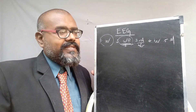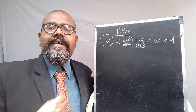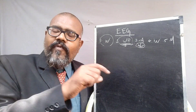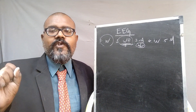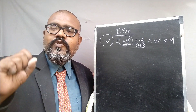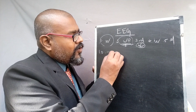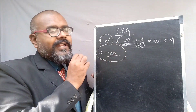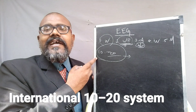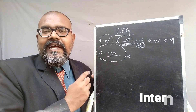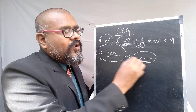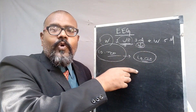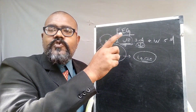The third question is: what is the procedure to acquire the EEG? All signals can be acquired from the human body using transducers like electrodes. Here, 10 to 20 electrodes are used for acquiring the electrical activity of the brain. There is an internationally recognized 10-20 system that defines where these electrodes are placed on the scalp — the external layer of the head.